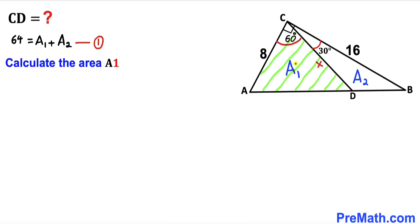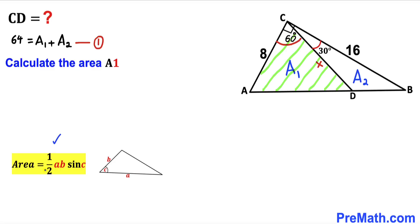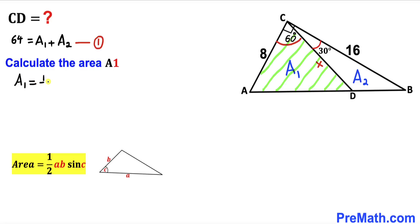Now let's calculate area A sub 1 for the shaded triangle ADC. Using the formula area equals one-half times side A times side B times sine of the included angle C, our two side lengths are 8 and x with an included angle of 60 degrees. So A sub 1 equals one-half times 8 times x times sine of 60 degrees, which simplifies to 4x times sine of 60 degrees.